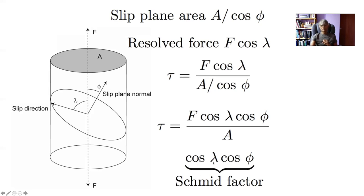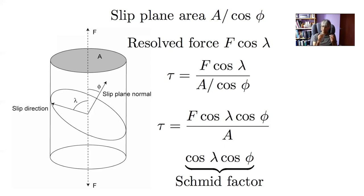The Schmid factor cos(lambda)·cos(phi) is at a maximum when both angles are 45 degrees. cos(45)·cos(45) gives 0.5, which is the maximum value the Schmid factor can have. There will be multiple slip systems in a crystal, and the one that will operate is the one with the largest Schmid factor.